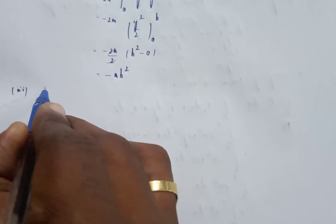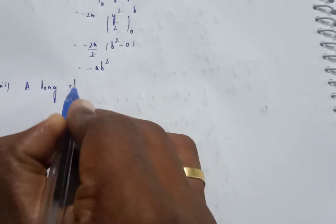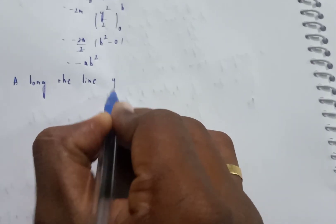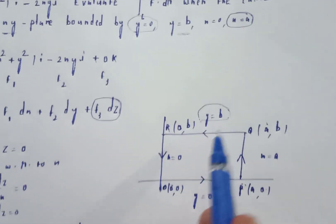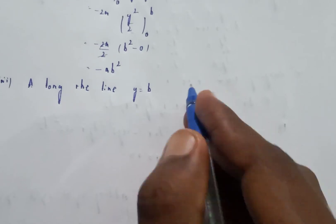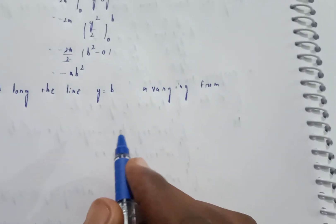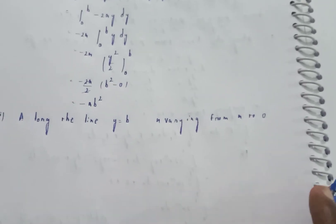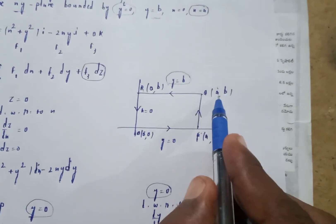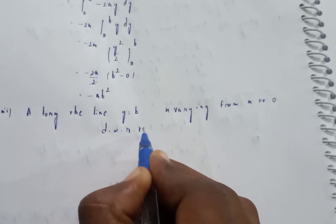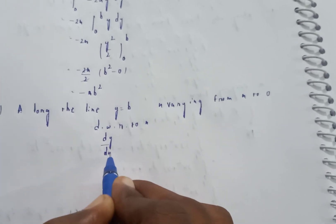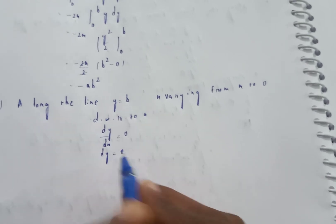Along QR: y is equal to b, so dy is equal to 0. x varies from a to 0 (clockwise direction). Substituting y=b and dy=0, the dy term vanishes. Only F1·dx = (x² + b²)·dx remains.